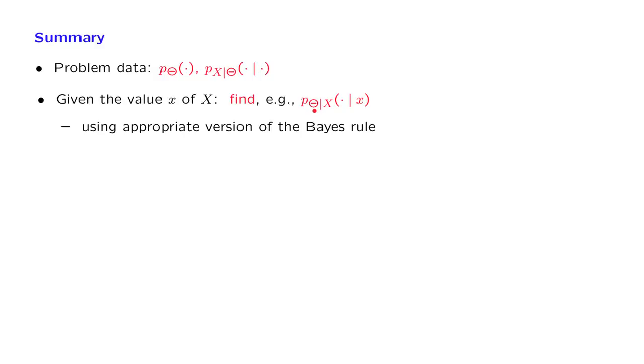In the case where theta is discrete, this will be in terms of a PMF. If theta is continuous, this would be a PDF. We find the posterior distribution by using an appropriate version of the Bayes rule. And here we have four different combinations, or four choices, depending on which variables are discrete or continuous.